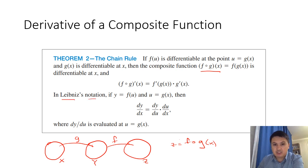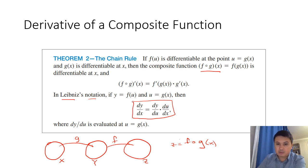In Leibniz notation, this is somewhat easy to remember. If y is f of u and u is g of x — so this is the composition — then dy/dx is dy/du multiplied by du/dx. As you can see, there's kind of a cancellation and you obtain dy/dx. This is an easy way to remember, however not always the most useful approach.